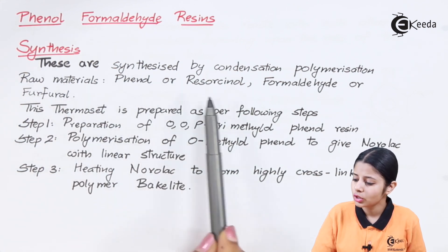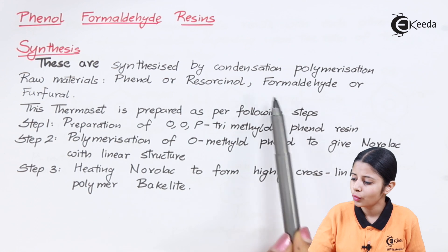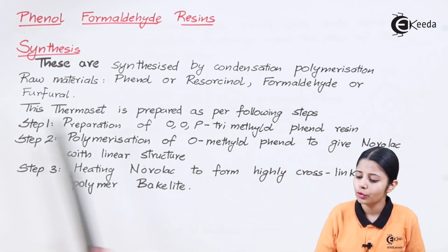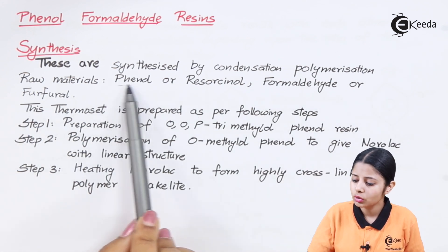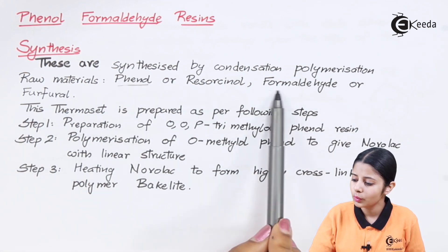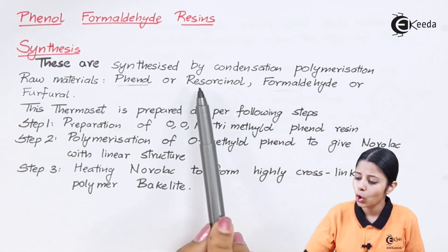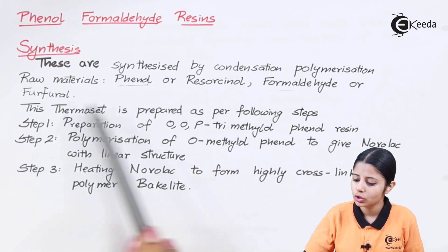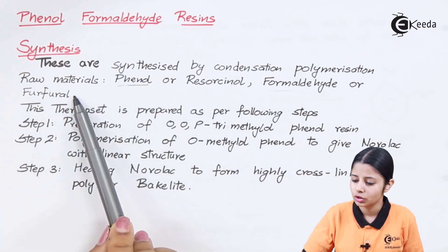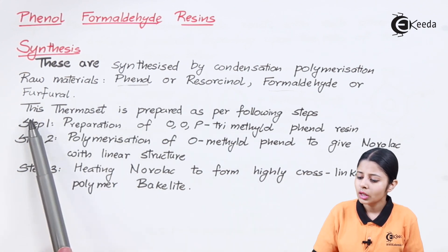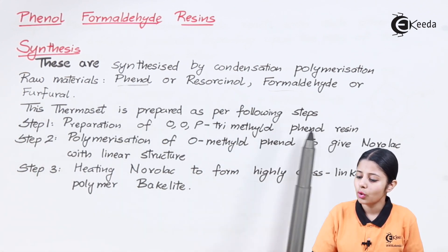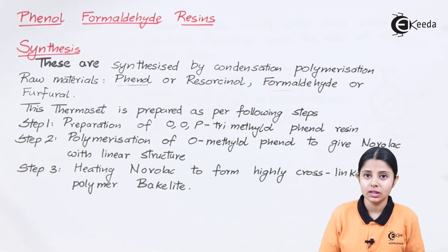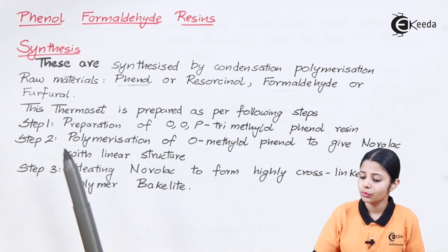The raw materials are phenol or resorcinol, and formaldehyde or furfural. We can use either combination. The thermoset is prepared following three steps, and we will study each and every step in detail.